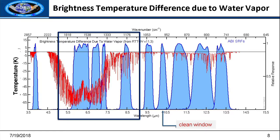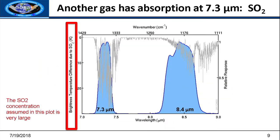We've taken the completely dry atmosphere, computed the temperature, then done the same thing with water vapor and subtracted — reinforcing that each channel has some cooling due to water vapor. The 10.3 is fairly clean; 9.6 is pretty clean too but has ozone absorption. We see a progressive increase in how much water vapor affects brightness temperature, and the three big water vapor channels are prominent. The same thing can be done with SO2: the 7.3 channel, in addition to detecting water vapor, will also detect SO2.